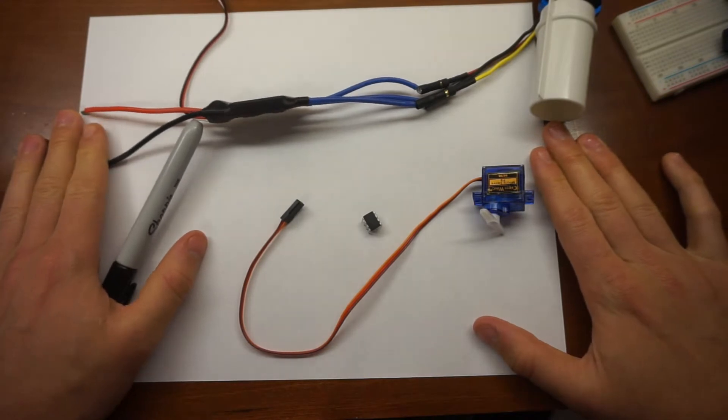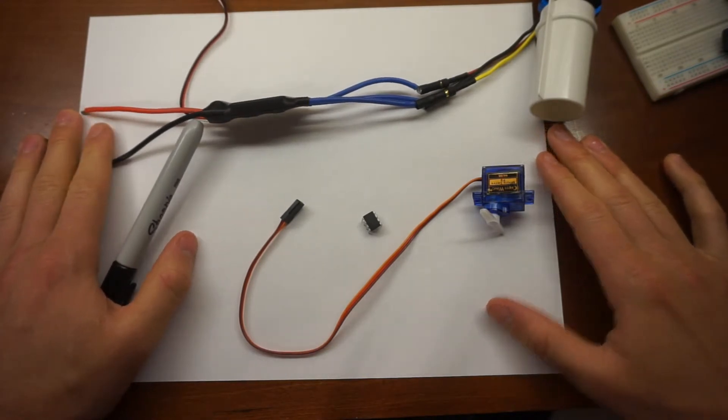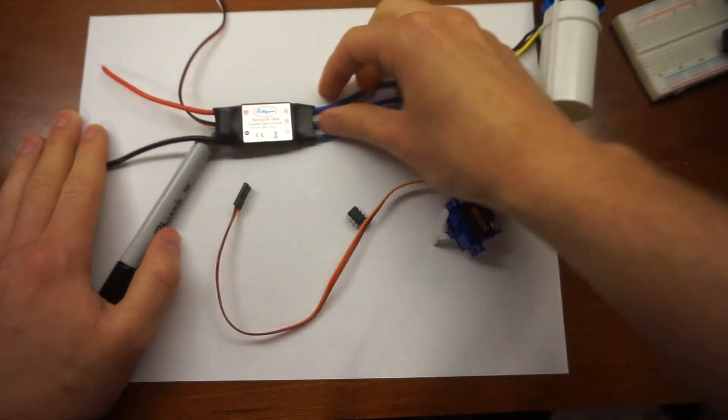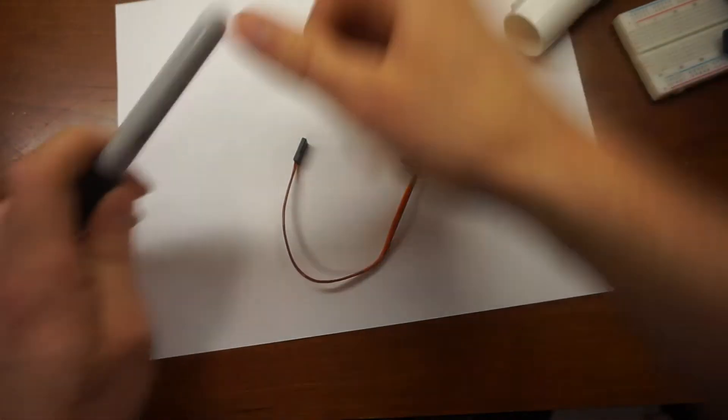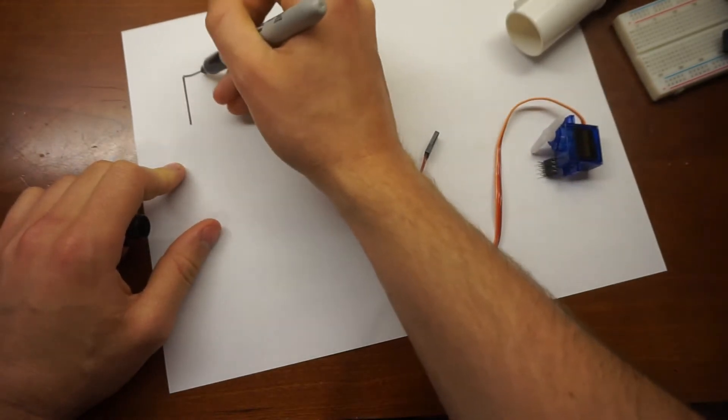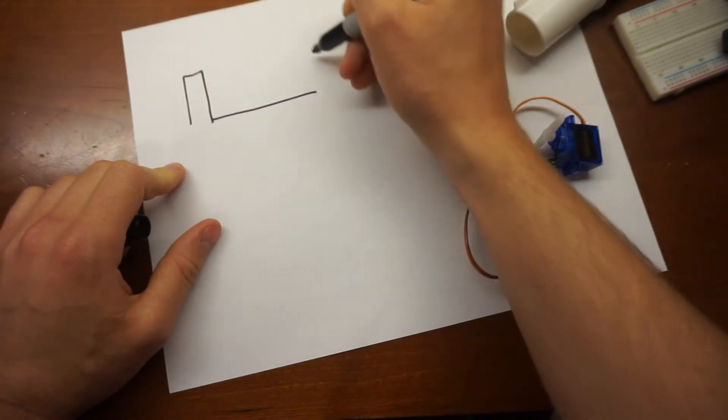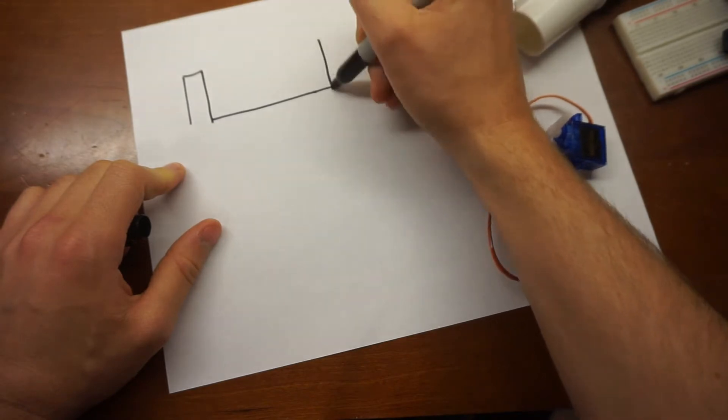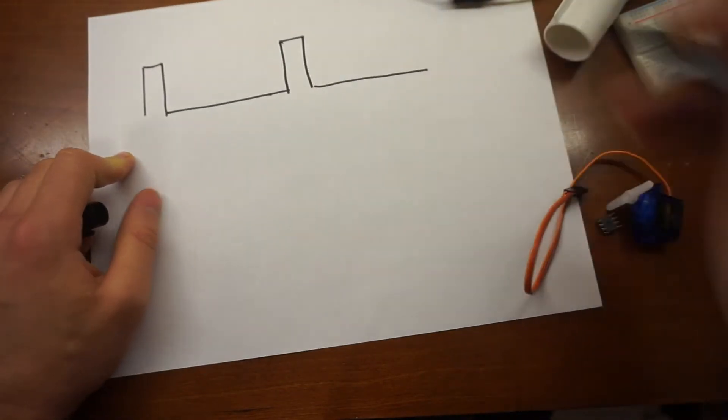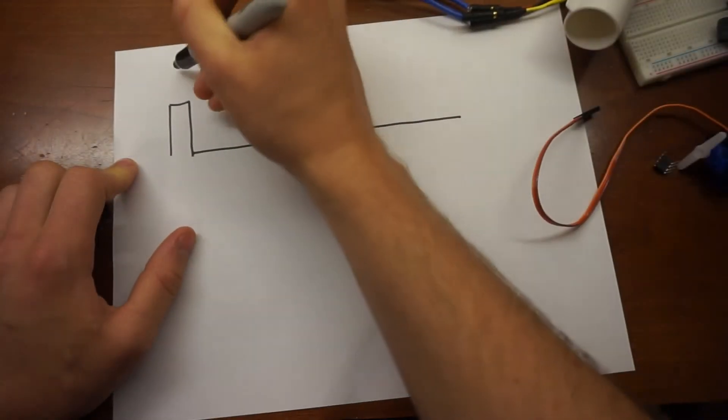This video is on generating servo pulses for controlling servos and electronic speed controls. If you've ever tried to do this before or if you've ever scoped it up, you would know that the actual pulse that's being sent between the controller board you have and the device looks like this. This is what we call a PWM signal.